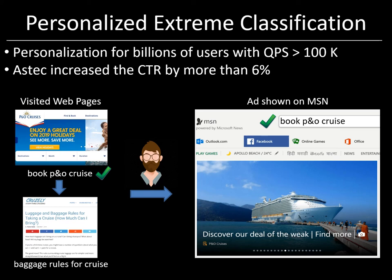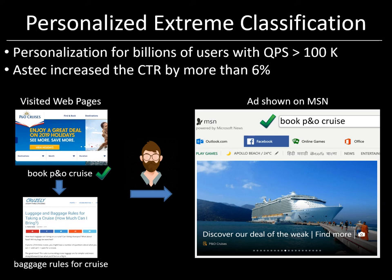I hope this illustrates why deep extreme classifiers need to be not only very accurate but also highly scalable, both in terms of their training and prediction times. In order to demonstrate that DeepXML is a general framework, we applied it to the task of predicting a product's Amazon category from just its image. This required only minimal changes to the architecture, where we simply replaced Aztec's short text feature extractor by ResNet18 and everything else remained more or less the same. Despite this very simple change, DeepXML's prediction accuracy was 10% higher than Parabel, Dismec, and Slice on the pre-trained features generated by the very same ResNet18 model.